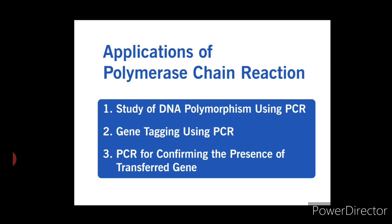Near-isogenic lines differ only for the presence and absence of a specific gene for pseudomonas resistance. Third, PCR for confirming the presence of a transferred gene. When a chimeric gene is transferred to cultured cells or organisms, primers can be designed to conduct PCR for amplification of the transferred gene sequence. This technique allows confirmation of transfer and maintenance of the gene of interest.